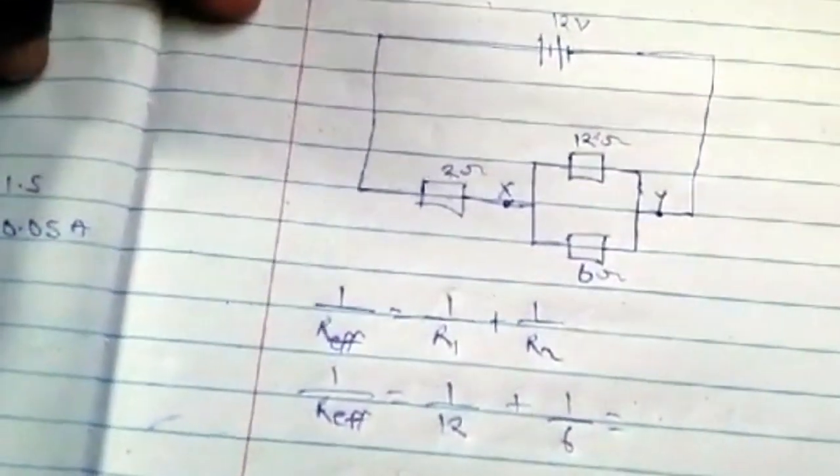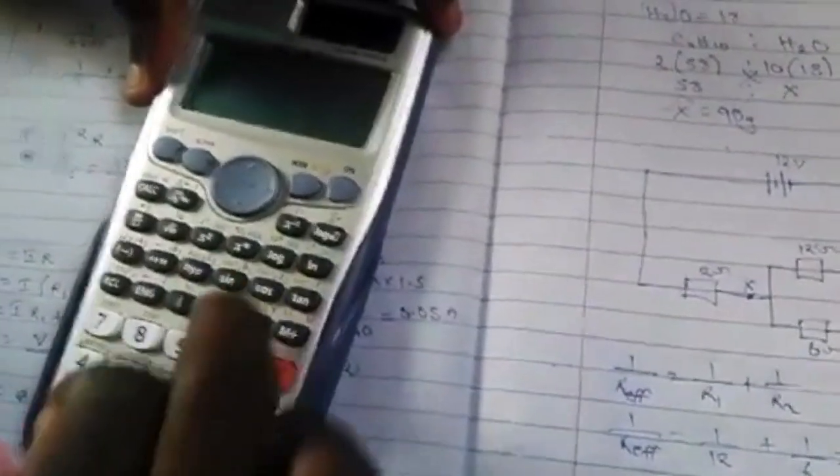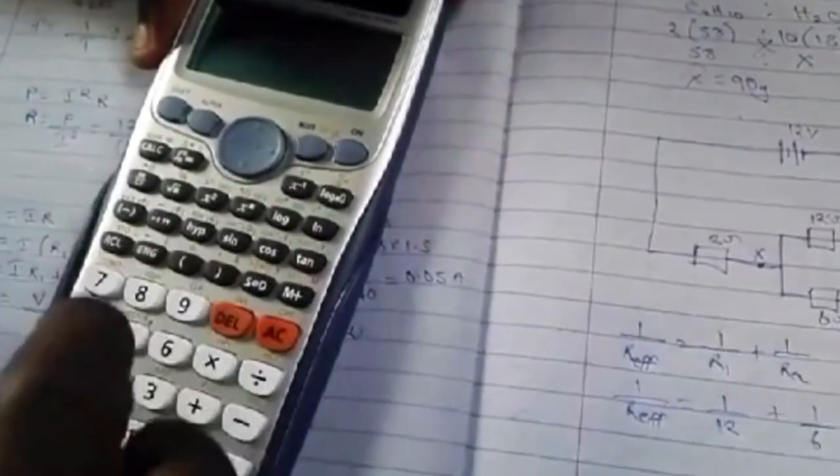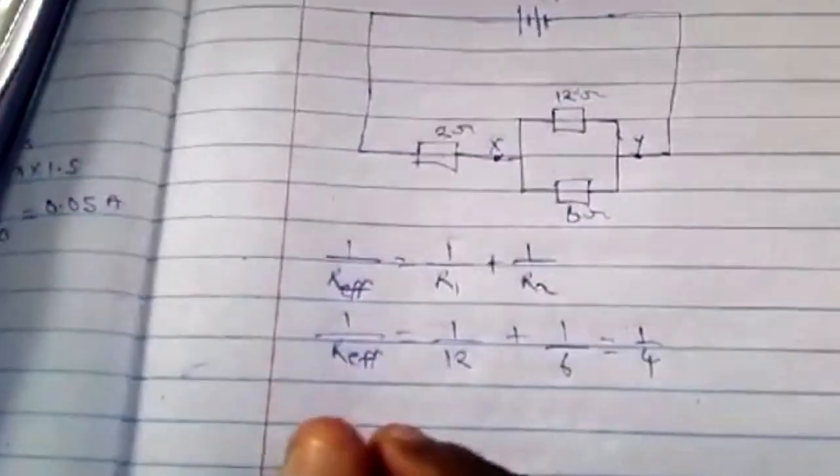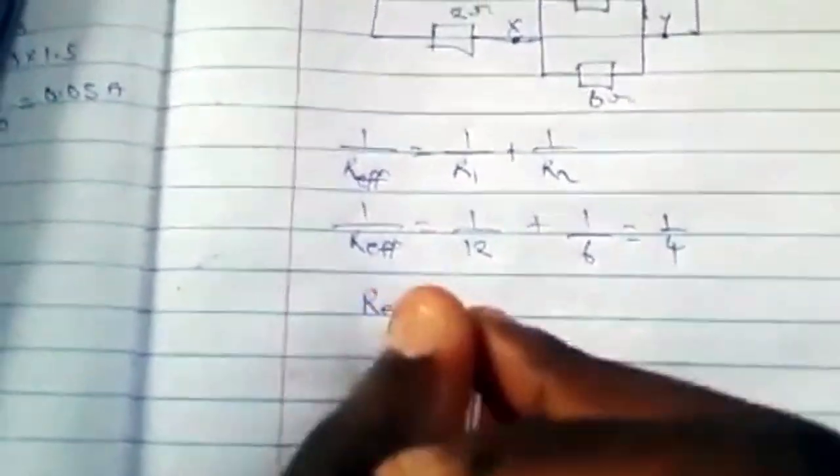This equals 1 over 4. We cross-multiply and it gives us the effective resistance equals 4 ohms. That's the effective resistance.